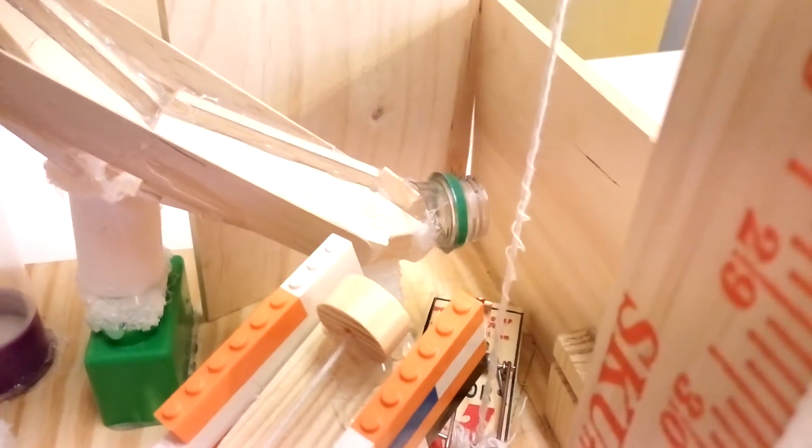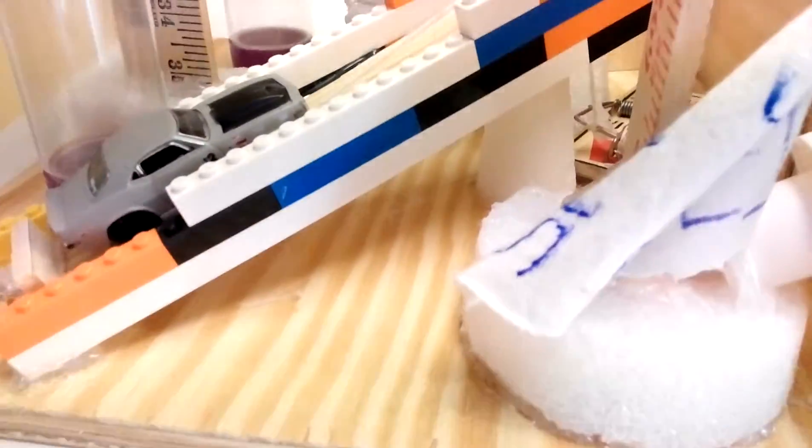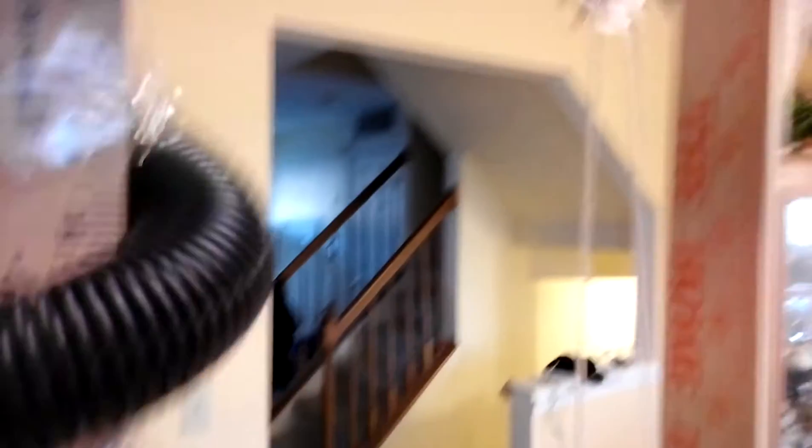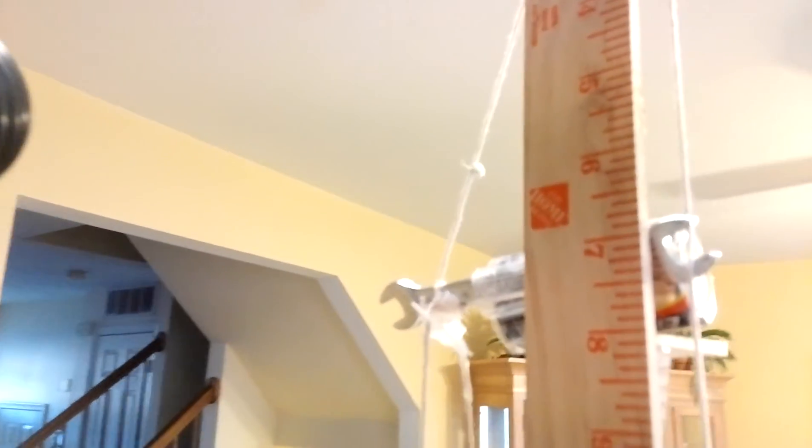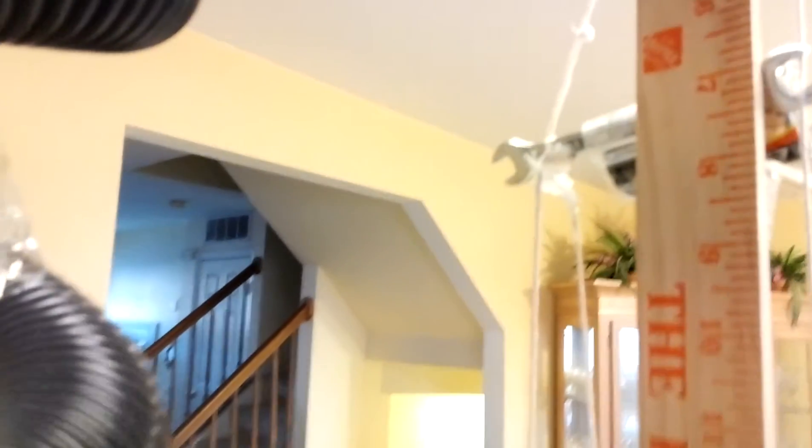After that, it hits the lever, which is the mousetrap. The lever then pulls the car, the wheel and axle, up the incline plane here, and then from there it triggers the pulley, and that's the last simple machine used.